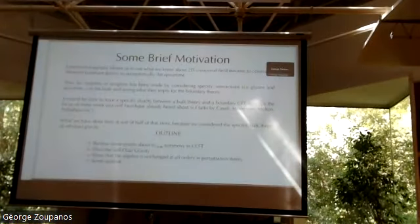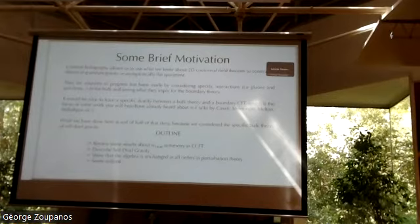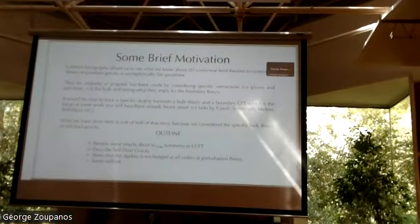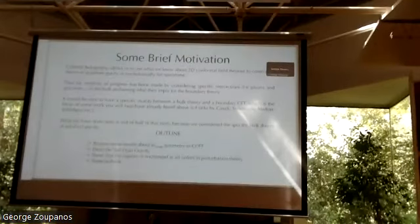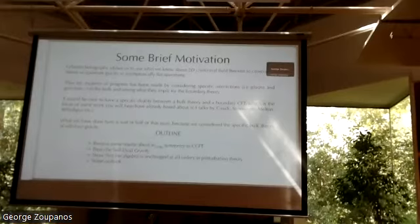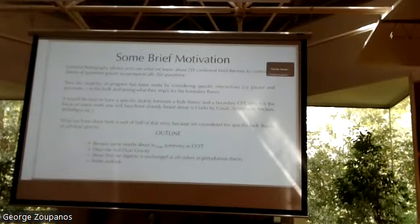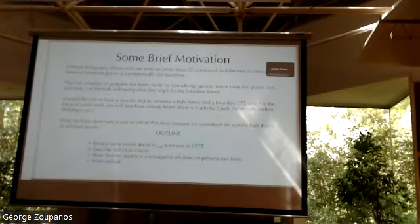Another nice part about not being the first speaker is you've already provided a lot of the background I needed. Just to reiterate: celestial holography is nice because it allows us to use what we know about 2D conformal field theories to constrain a putative theory of quantum gravity in four-dimensional asymptotically flat spacetime. The majority of progress thus far has been made considering interactions between gluons and gravitons in the bulk and seeing what they imply for the boundary theory using symmetries.